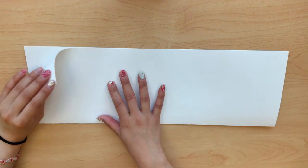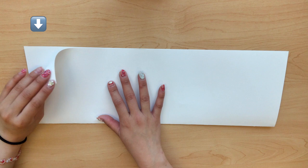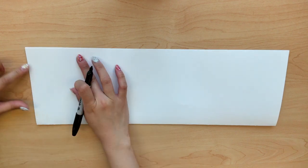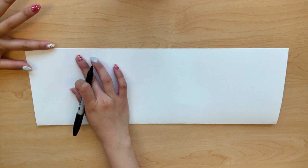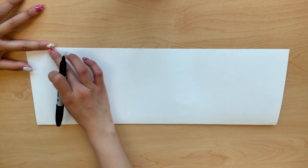Once you have that done, you want to make sure that the fold of your paper is at the top, pointed away from you. On this part of our paper, we're going to take our finger and line it up with the edge of the paper. We're going to make a line going halfway down our paper.